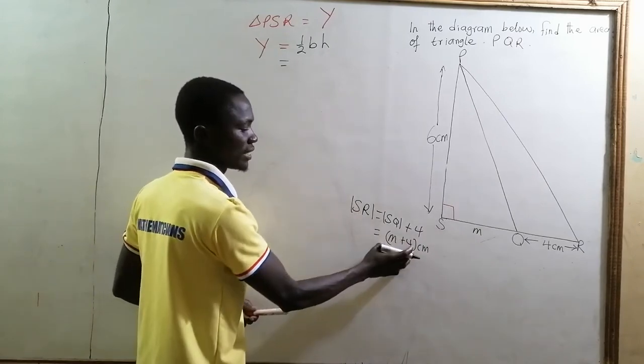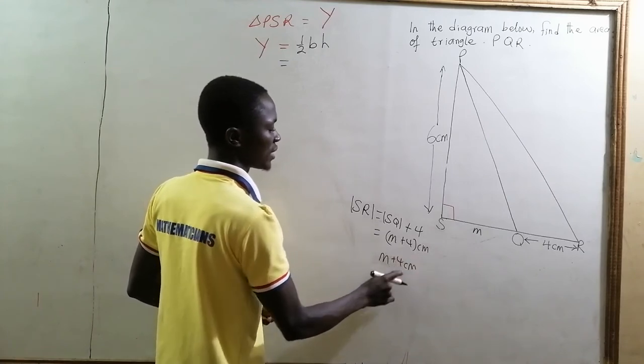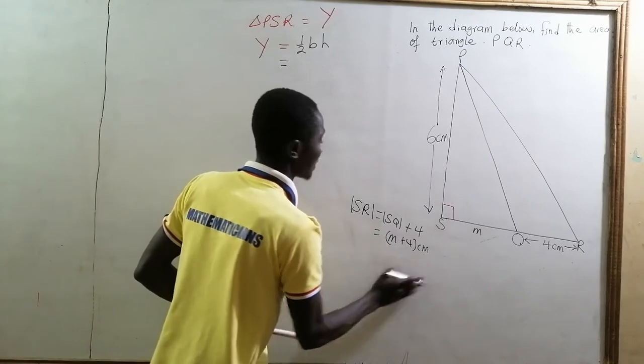We have to put this in brackets and bring the centimeters. If we write M plus 4 centimeters, the centimeters will not affect the M. So we put it in a bracket.